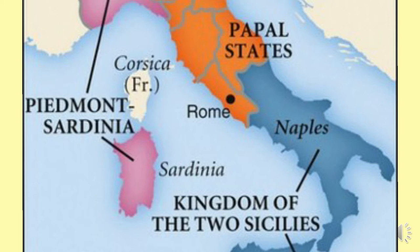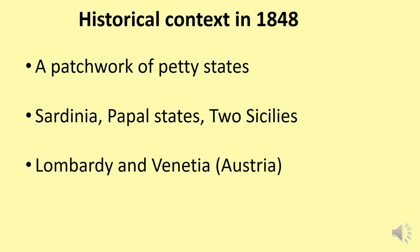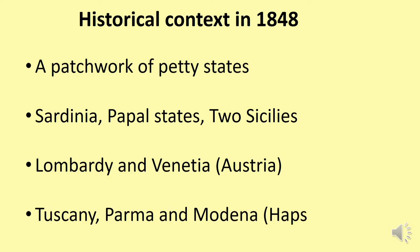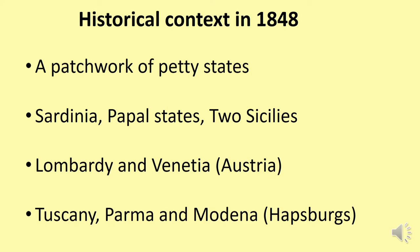The Kingdom of Sardinia was in the north and also on an island, the Papal States were in the central region, and the Kingdom of the Two Sicilies was in the south. There were also petty states such as Lombardy and Venezia — they used to be republics, were independent, but were defeated by Austria and incorporated into Austrian territories. The kingdoms of Tuscany, Parma, and Modena had rulers who responded to the Habsburgs, the dynastic family of Austria. So most of the territories of Italy before unification belonged to Austria.